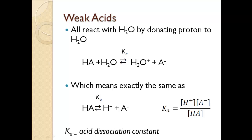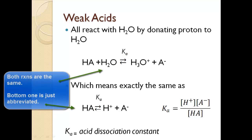Weak acids all react with water to donate a proton to water. For example, with the hypothetical weak acid HA and water, the weak acid donates a proton to water and leaves the weak base ion behind. The equilibrium constant for this — called the acid dissociation constant, Ka — is written as products over reactants, just like any equilibrium expression.